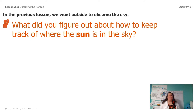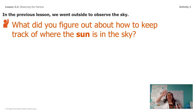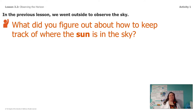So last time we were together, I asked you guys to go outside and observe the sky and try to figure out a way that we can keep track of where the sun is in the sky so we can explain it to somebody who's not there. What did you guys come up with about how to keep track of where the sun is in the sky?